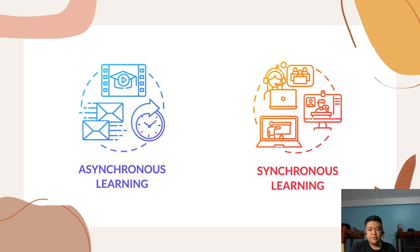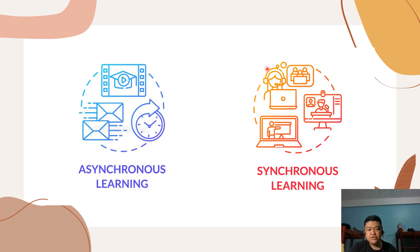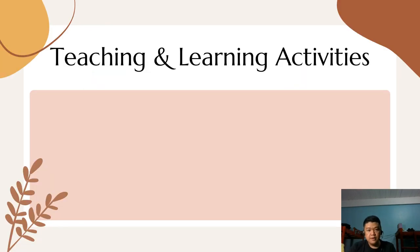Another type of learning is the synchronous type. When we conduct our lessons through Google Meet, that is an example of synchronous learning. In synchronous learning, students are engaged in learning at the same time.